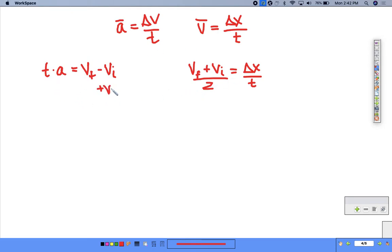So on this side, if I add vi, I have vi plus at equals vf, which we had as one of our simple equations.